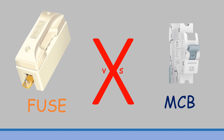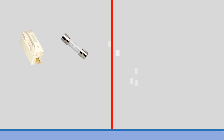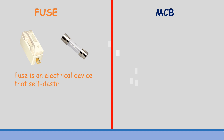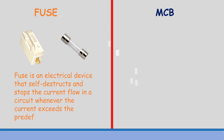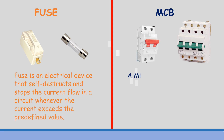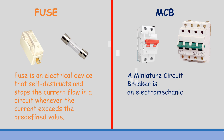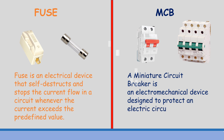Hello friends, this video is about the basic difference between fuse and MCB. A fuse is an electrical device that self-destructs and stops the current flow in a circuit whenever the current exceeds a predefined value. A miniature circuit breaker is an electromechanical device designed to protect an electric circuit from overcurrent and short circuit.